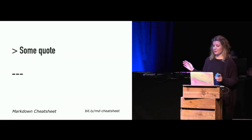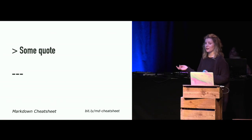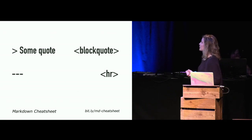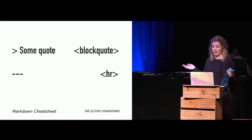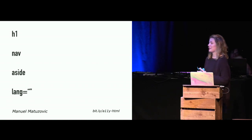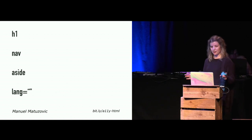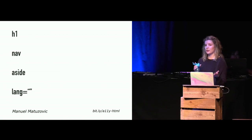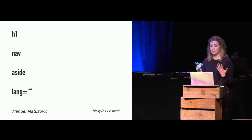Even if you're using GitHub or some content management tool to publish your docs, it's important to understand the semantic output of that markdown or rich text editor. In markdown, for example, the greater-than sign followed by text translates to a block quote tag, or using three or more hyphens translates to a horizontal rule tag. Manuel, who is also here at this conference, wrote a nice article about writing HTML with accessibility in mind. We can use one h1 tag to describe what the page is about, a nav tag to clearly indicate the start and end of navigation bars, or an aside tag for content secondary to the main material like a sidebar with additional links.